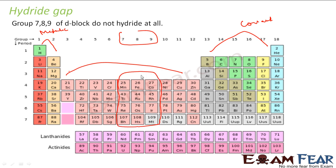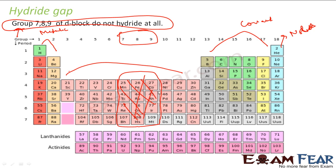So if you see, there is a gap. Groups 7, 8, and 9 of the D-block don't form hydrides, and there's a discontinuity. Almost all other metals and non-metals form hydrides, and noble gases also don't form hydrides, but that is not in continuity. Going from group 1 to group 17, we continuously find hydrides being formed, but then we find these three groups — 7, 8, 9 — that don't form hydrides. That gap is called the hydride gap.